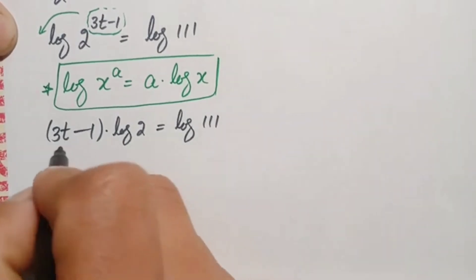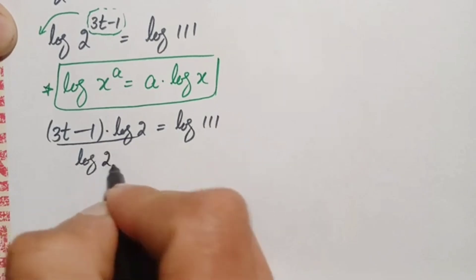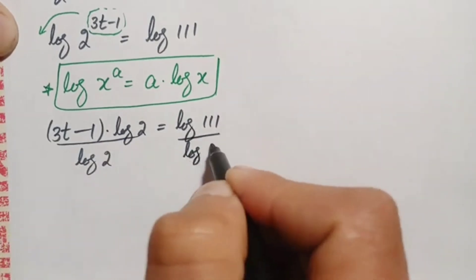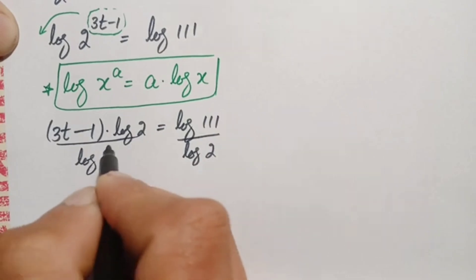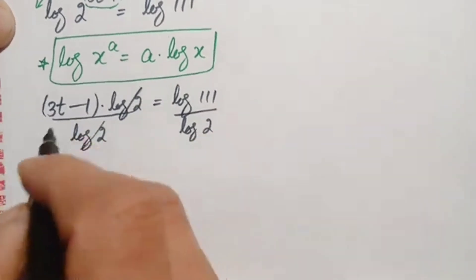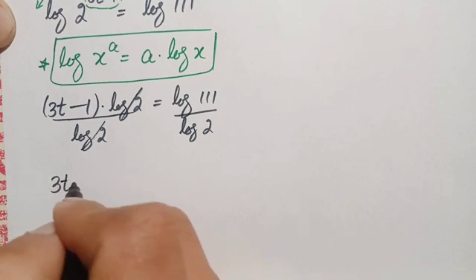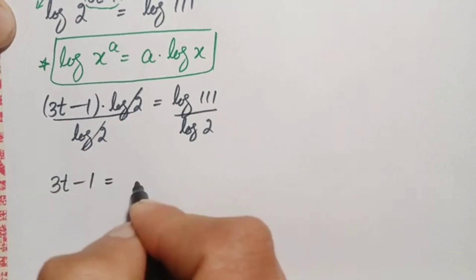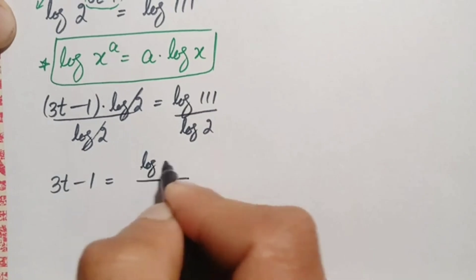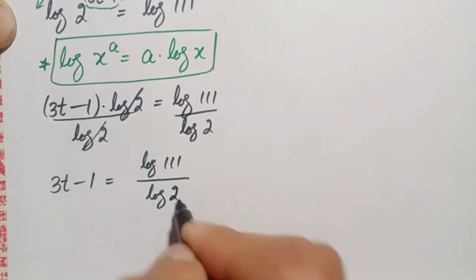Now we will divide both sides by log of 2 to eliminate it from the left hand side. The log of 2 terms cancel, and only 3t minus 1 remains on the left. So this becomes 3t minus 1 is equal to log of 111 divided by log of 2.